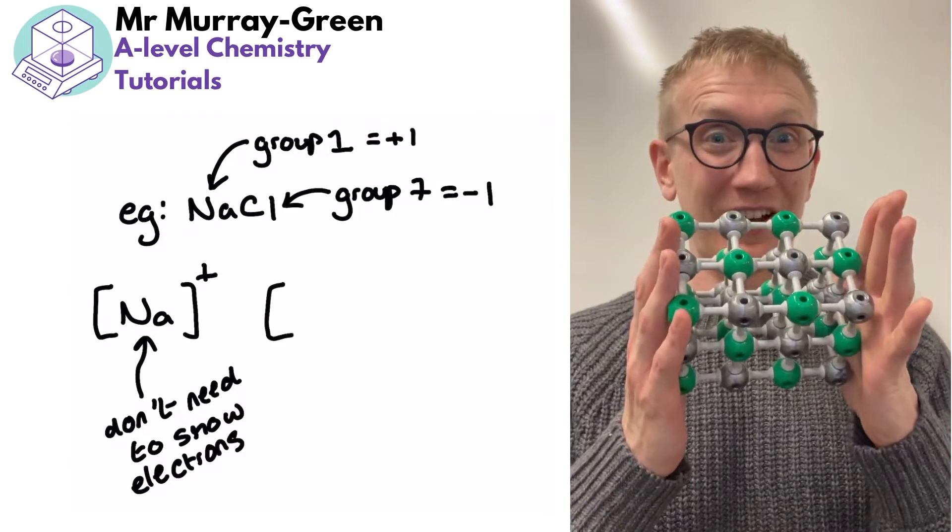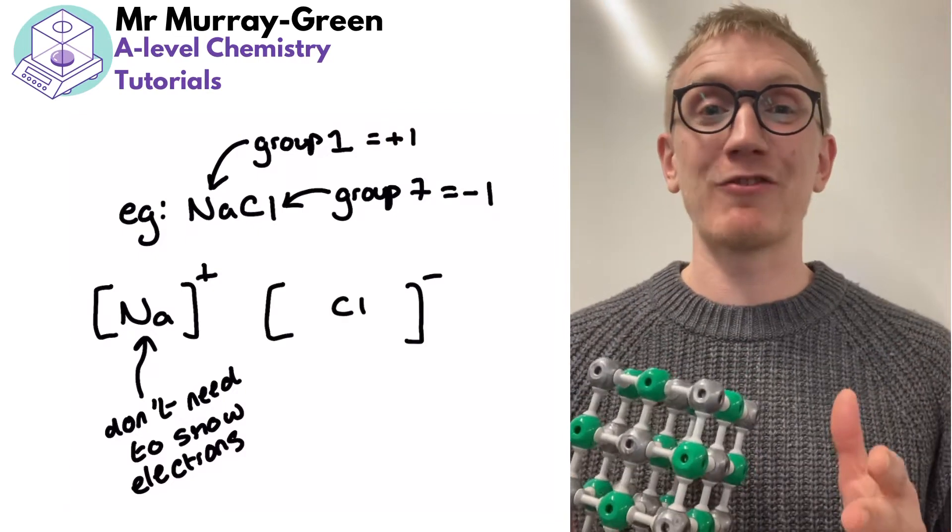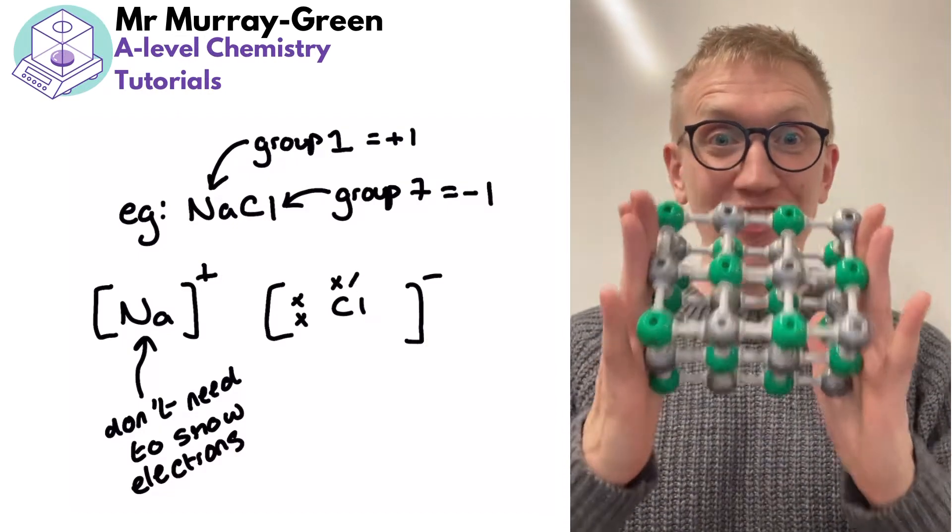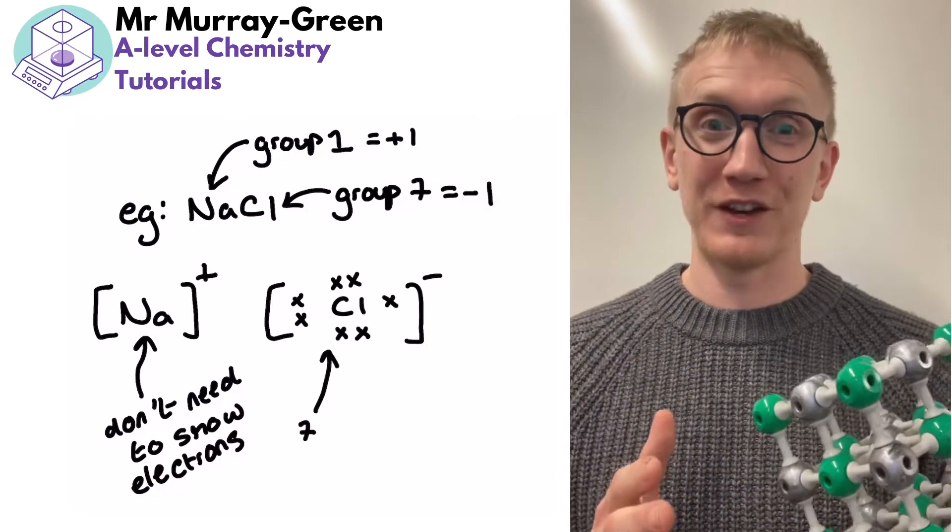That would be a very big dot and cross diagram. So the dot and cross diagram just represents the simplest ratio between the ions in the giant ionic lattice structure, much like the formula does.